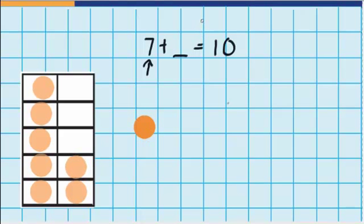Now the question says 7 plus how many would make 10? Well, if I look at my 10s frame, I can see that there's 3 gaps here, so that must mean I'd need 3 more counters. So 7 plus 3 equals 10.